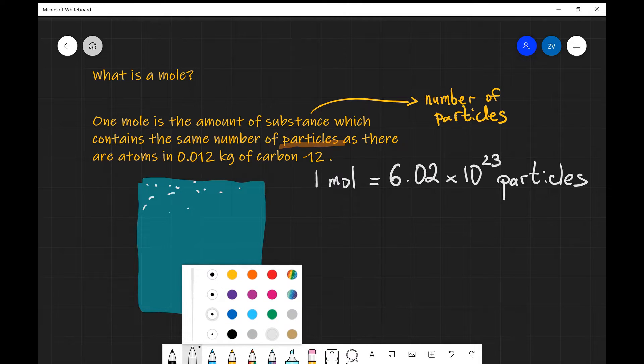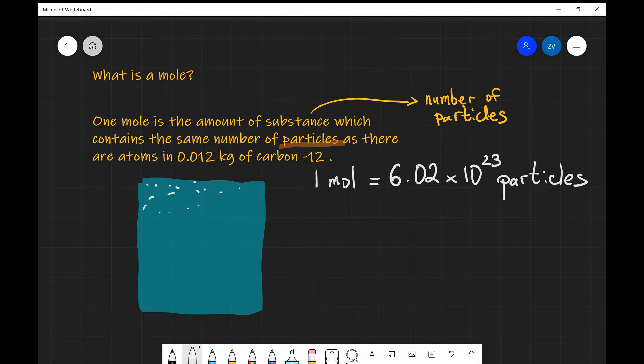If I had a certain substance over here on the left, if we were to zoom in, we would see quite a lot of individual particles. Obviously, I can't draw all of them, it's not up to scale. But if you had exactly one mole, you would have 6.02 times 10 to the power of 23 particles.